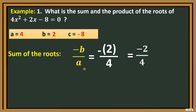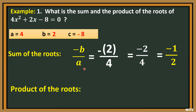Then simplify: negative 2 over 4, and that is negative 1 over 2. Next is the product of the roots, that is c over a. By substitution, the value of c is negative 8, and the value of a is positive 4. Then simplify, that is negative 2. Therefore, the sum is negative one-half, and the product is negative 2.